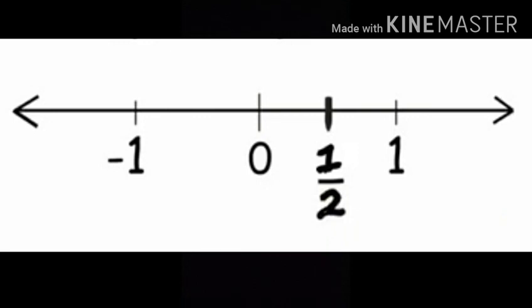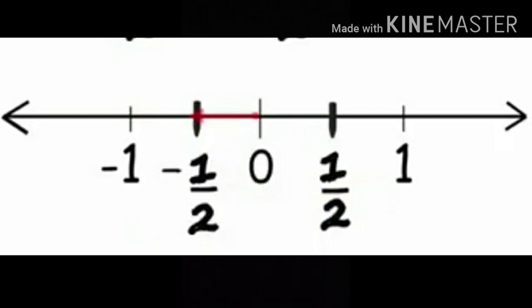Now we know how to plot positive numbers. For negative rational numbers, we will repeat the same procedure but on the left side of 0.